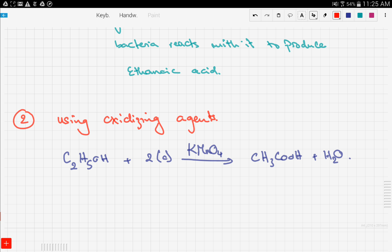This reaction is done in the lab. Potassium manganate solution usually has a purple color. As the reaction proceeds, we get a colorless solution, which means that the acid has been formed.